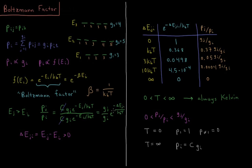This number e to the minus delta E_JI over kT: the Boltzmann constant is always positive, temperature is always positive or zero, and delta E_JI is positive because E_J is defined to be bigger than E_I. So this is e to the minus some positive number, which is going to be less than one. So if they have the same degeneracies — say both singly degenerate — then the higher energy level is less likely to be observed than the lower energy level. The likelihood of our system being in a given energy level decreases with the exponential of its energy.